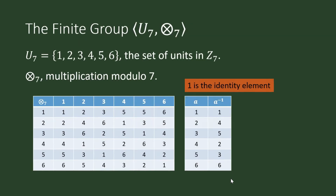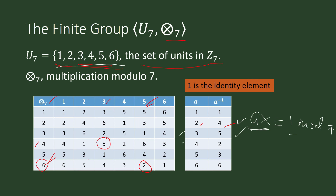Notice that there is only one identity element for each group. For addition modulo n it is always 0; for multiplication the identity element is 1. Also, each element has exactly one inverse: the inverse of 4 is only 2, the inverse of 5 is only 3, and the inverse of 6 is 6 itself.